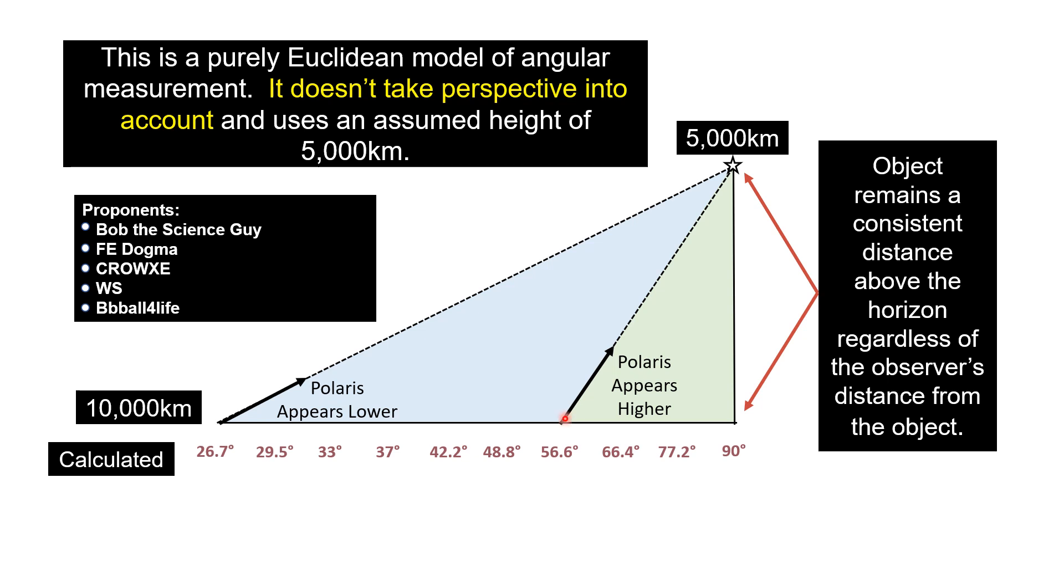So we can see here when you're close, Polaris appears to be higher in the sky. And of course, when you get farther away over here, Polaris appears to be lower in the sky.